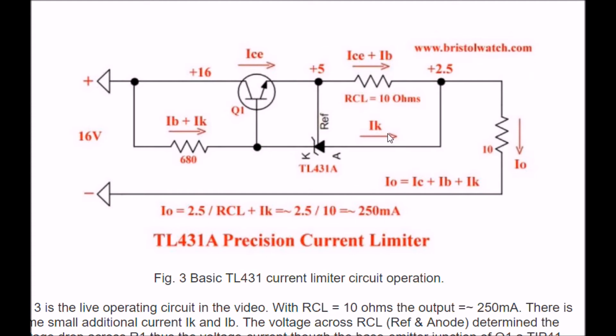You see there is a current IK. Here's IB and IK through the 680. The IB goes that way.